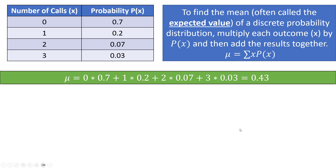On average the financial aid office receives about 0.43 calls between 8 and 9 AM. You can't receive 0.43 calls literally, but the expected value doesn't have to be one of the possible values. You might interpret this as meaning that on average the office receives somewhere between 0 and 1 call during that hour.